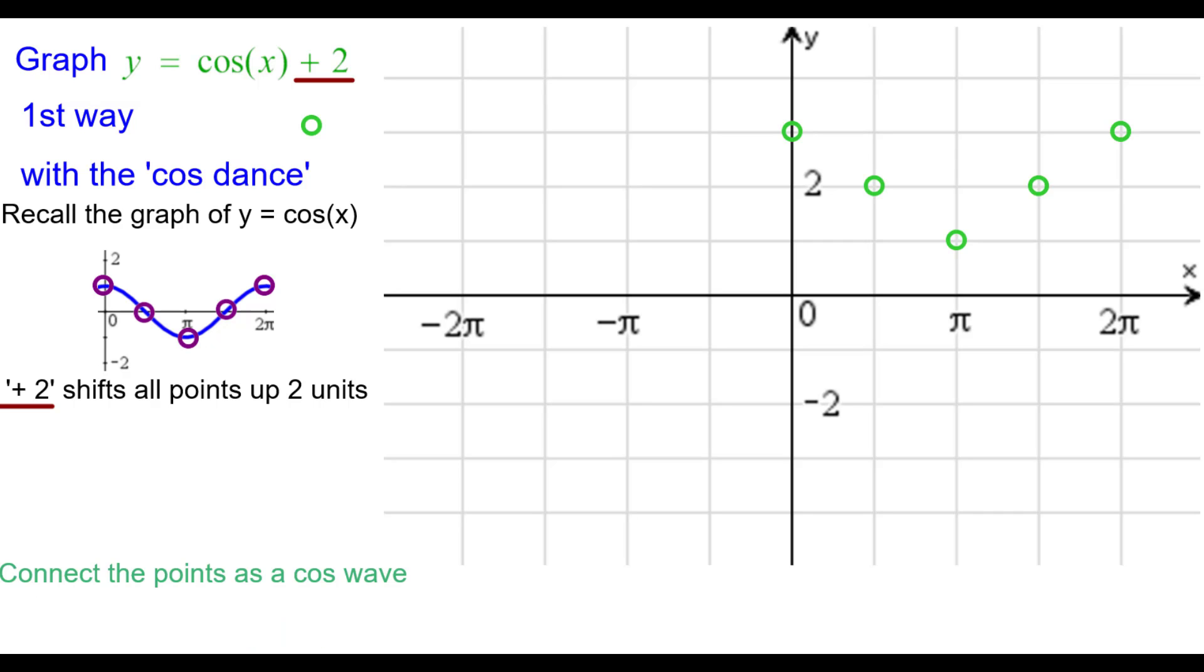So we need to connect the points as a cosine wave. So starting with the first point, I'll do half of a frown or concave down. And then those next three points will be connected with a smile, a concave up curve. And then half of a frown concave down. And that's one period of the wave.